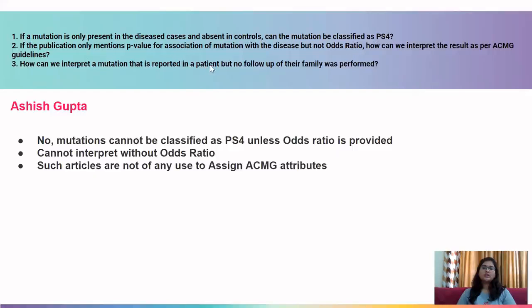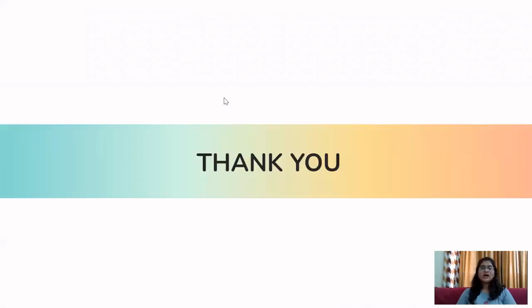Third question: how can we interpret a mutation reported in a patient but with no follow-up of their family? If a mutation is reported in a patient but there are no functional studies, no family segregation details, and no association details given, such articles are of no use and you cannot assign ACMG attributes from them — choose to ignore such articles. Thank you very much. I hope this session has clarified most of your doubts. If you still have any more doubts, please write back to us.